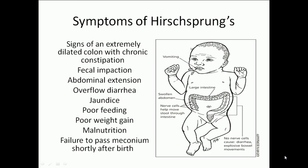Symptoms of Hirschsprung's disease include signs of extreme dilated colon with chronic constipation, fecal impaction, abdominal distension, overflow diarrhea, jaundice, poor feeding, poor weight gain, malnutrition, and failure to pass meconium shortly after birth.